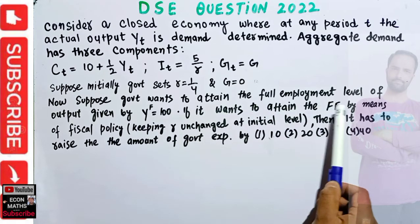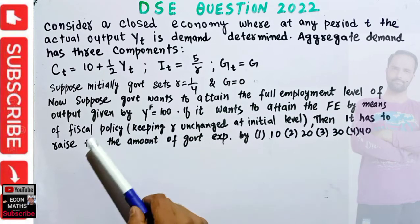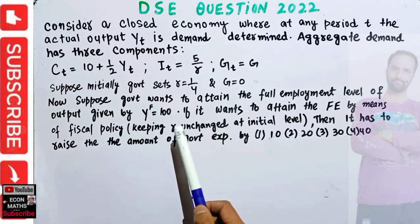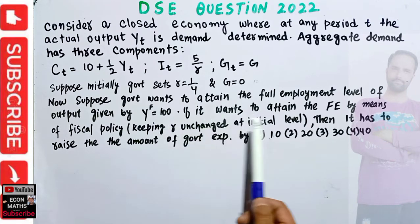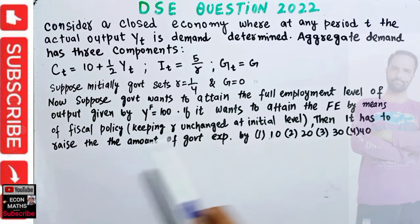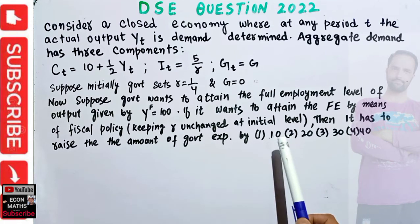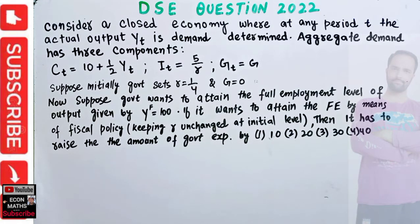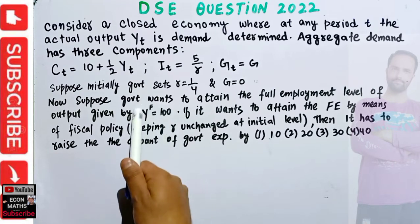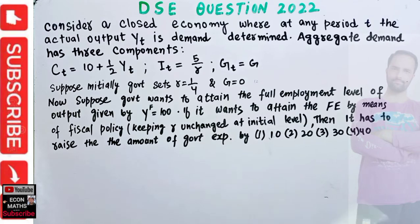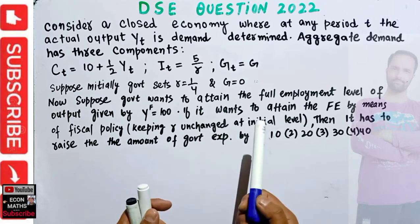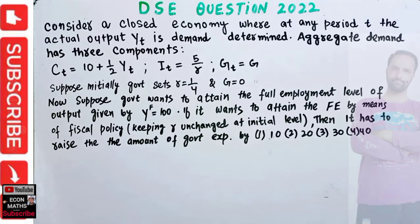If the government wants to attain full employment by means of fiscal policy — that means keeping the rate of interest unchanged at its initial level — it has to raise government expenditure. The options are 10, 20, 30, or 40. So we need to find out how much government expenditure should increase to achieve the full employment level of output. First, we need to find the equilibrium level of output.